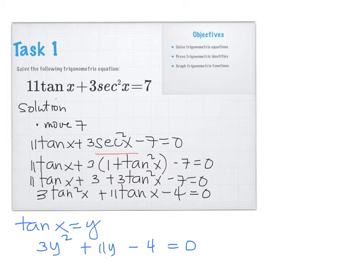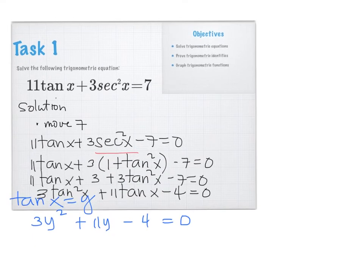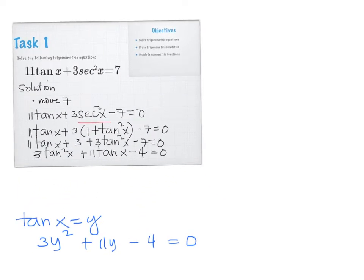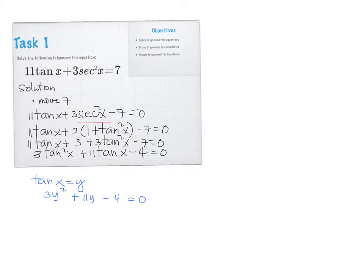Next, we factorize. So we have 3Y squared plus 11Y minus 4 equals 0. We factorize it.